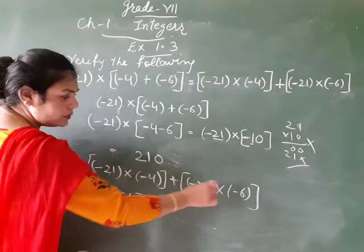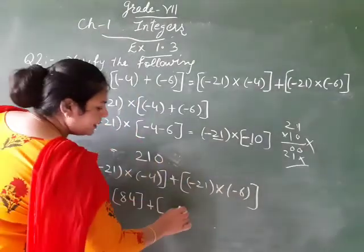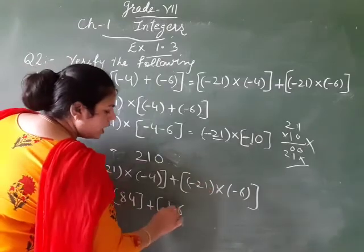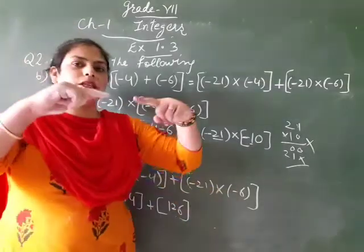Plus, next one: 21 into 6. 21 times 6: 6 ones are 6, 6 twos are 12, so 126. Minus times minus equals plus.